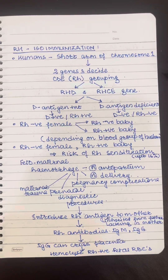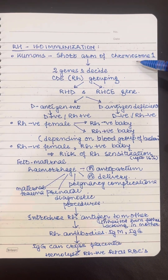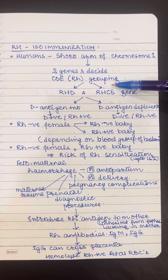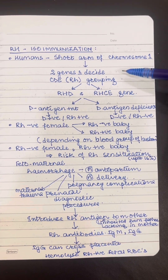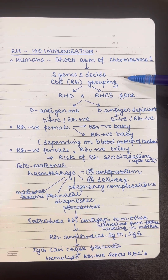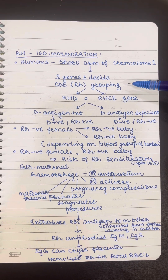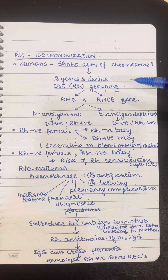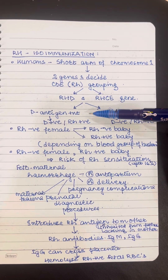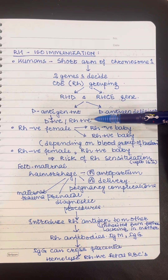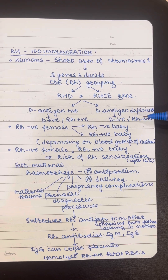In humans, the short arm of chromosome 1 has two genes, RHD and RHCE, which decide the CDE or RH grouping of humans. Those who develop D positivity or D antigen are called RH positive, and those with the antigen negative are called RH negative.